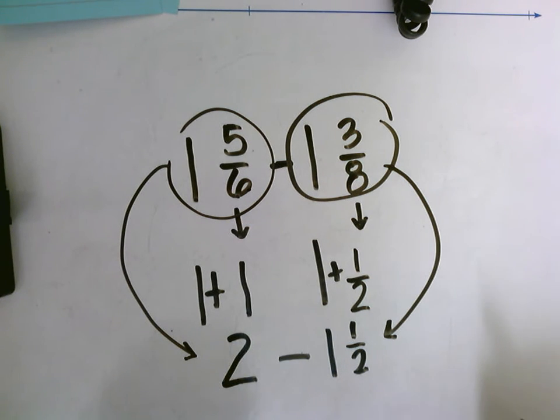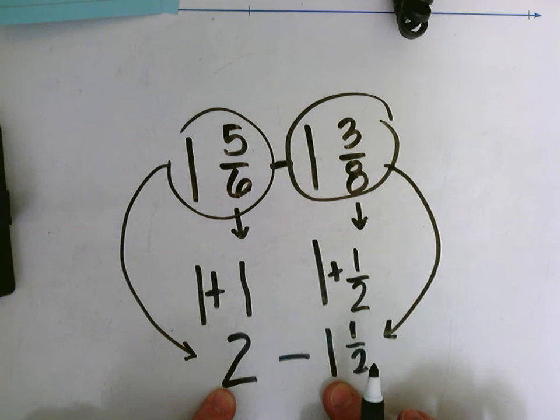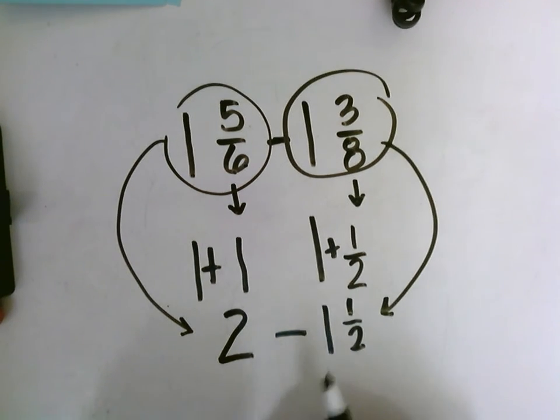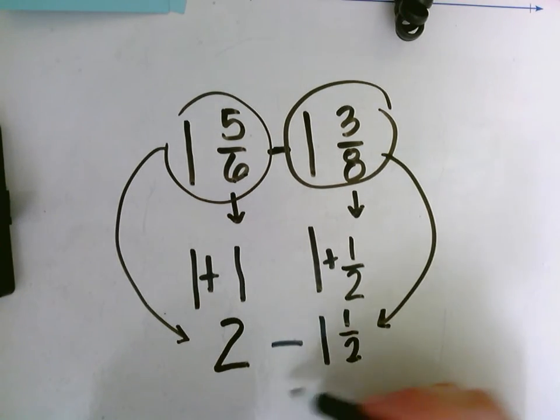Okay, so two take away one and a half. Sometimes it's helpful to think dollars - two dollars take away a dollar fifty is a dollar and a half. But I can do two take away one, that gives me one, and then I have that one, I'm taking half of it away, so it equals one half.